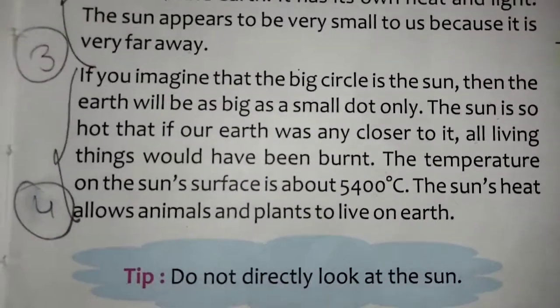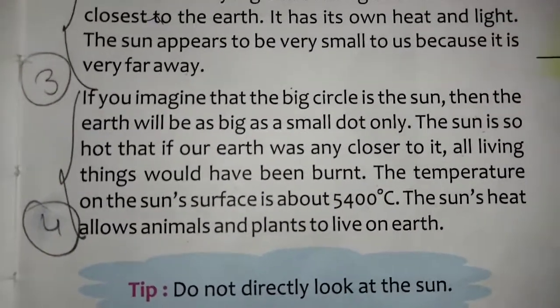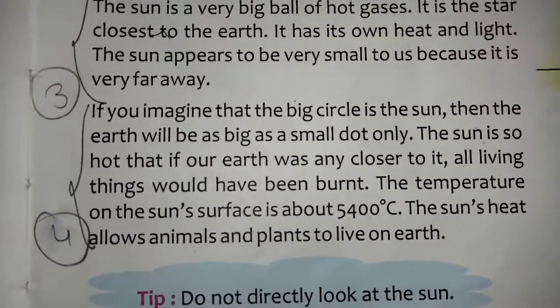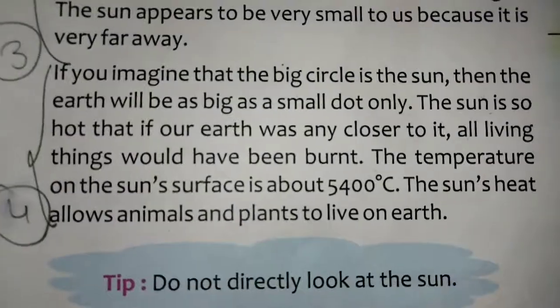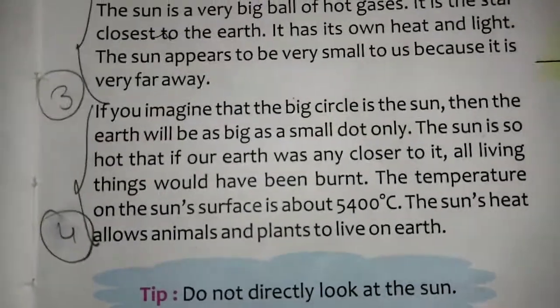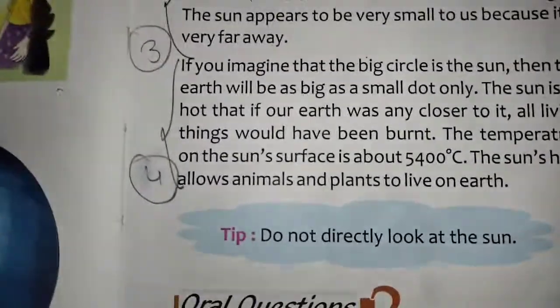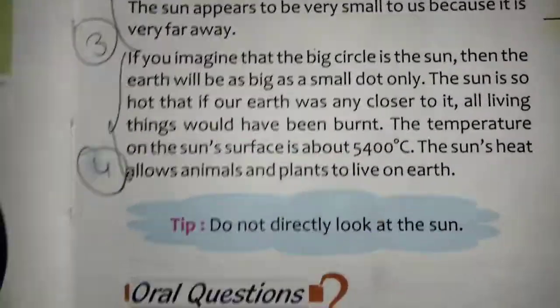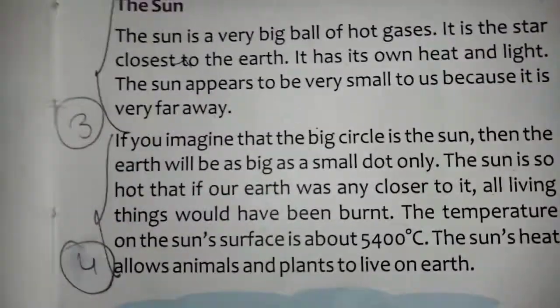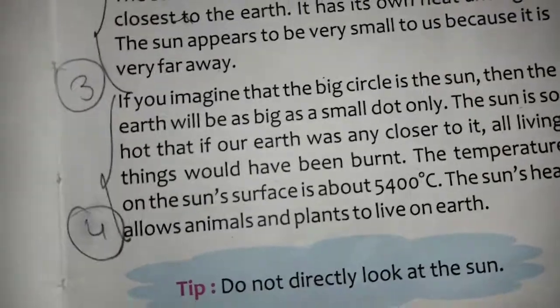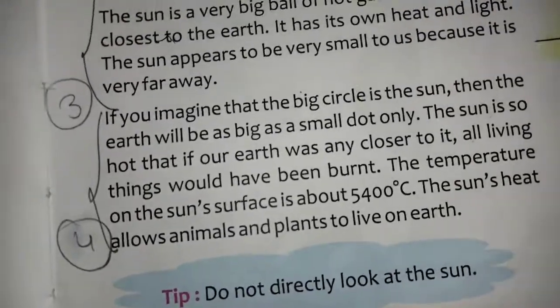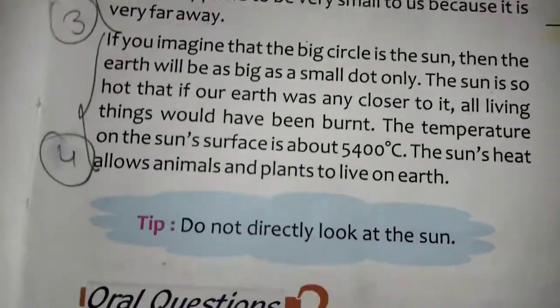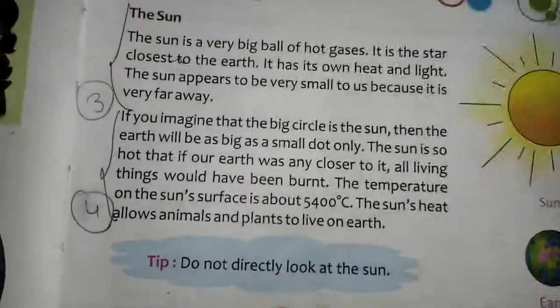The sun is so hot. If our earth was any closer to it, we would suffer greatly. You can feel the hotness of the sun even now in the month of May. If it is this hot from so far away, imagine what would happen if it were even nearer.